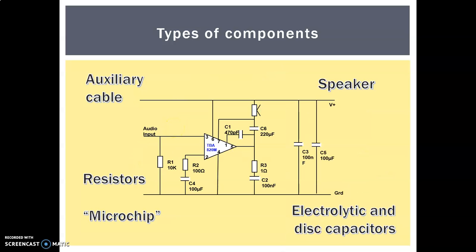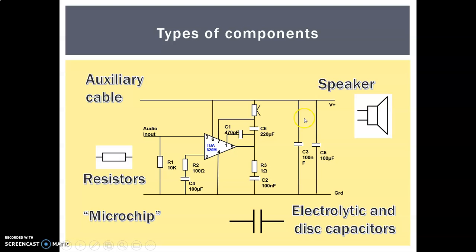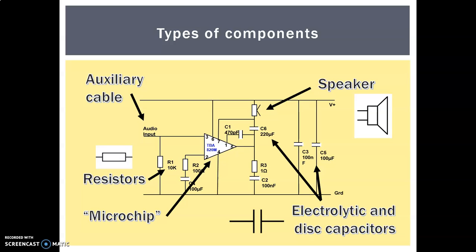In an electronic diagram we don't draw pictures — we use symbols instead. This one's for the resistor, this one's a capacitor, and this is a speaker. Looking around our electronic diagram, we can see the resistors, and here's our speaker. We have a variety of capacitors around the diagram, our auxiliary cable as the input on one side, and here's our microchip — this very complex-looking thing, where the numbers represent the legs on the chip.